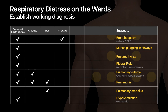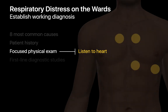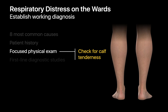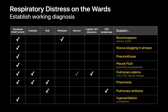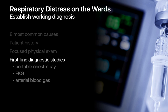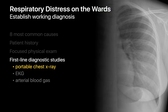A focused physical exam also includes listening to the heart for abnormalities, looking for jugular venous distension in the neck, and checking for calf tenderness. A pronounced cardiac murmur or jugular venous distension could open the door to a pulmonary edema diagnosis, while calf tenderness or a positive Homans sign might point toward PE. After the focused physical exam, the diagnostic workup moves toward first-line tests: the portable chest x-ray, EKG, and sometimes an ABG. Of these, the most comprehensive is probably the portable chest x-ray, where diagnostic radiologists enter the picture.